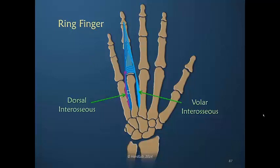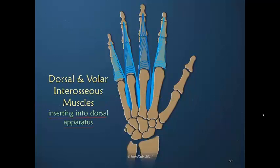The volar and dorsal interosseous muscles have identical functions with the exception of abduction and adduction — or more precisely, rotation of the proximal phalanx. Both dorsal and volar interosseous muscles insert into the dorsal apparatus, with the exception of some dorsal bellies of the dorsal interosseous muscles that insert into bone. Therefore they absolutely have to have the same functions because their insertions are identical; they just happen to be on opposite sides.